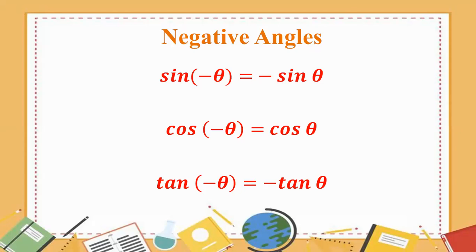Sin minus theta equals minus sin theta. Cos minus theta equals cos theta. Tan minus theta equals minus tan theta. We have here. Let's see what we have here. Look at the running. We have here. Then you do it all.